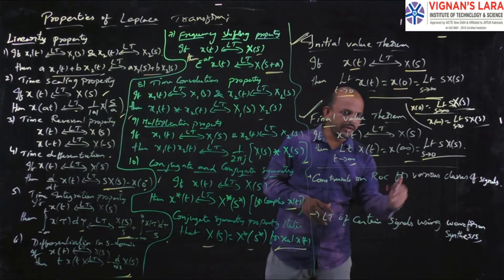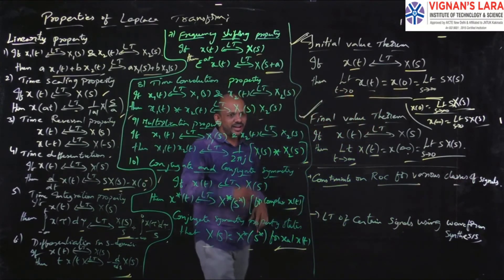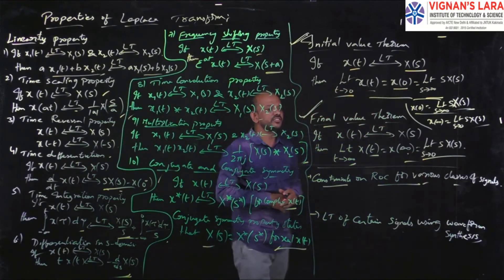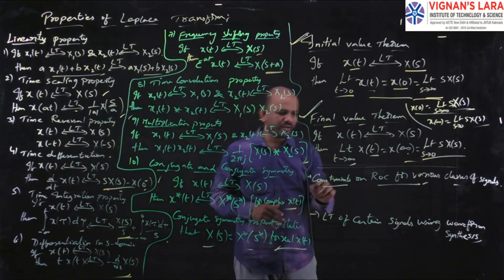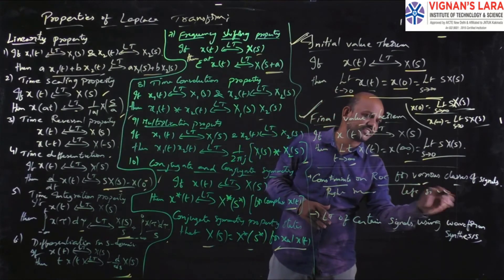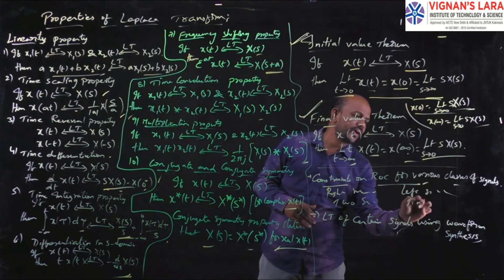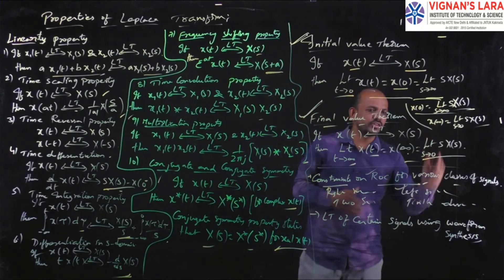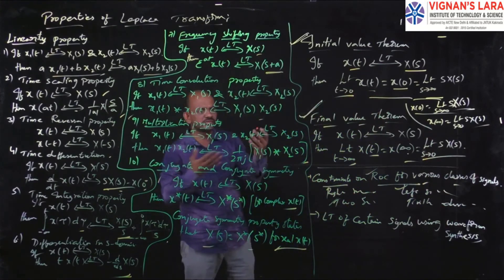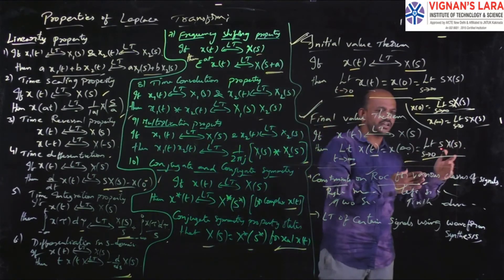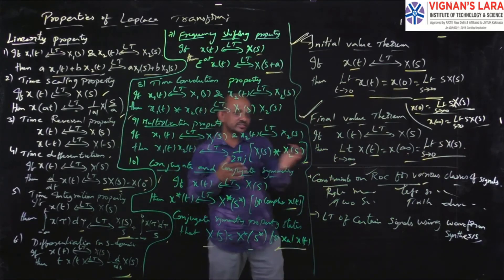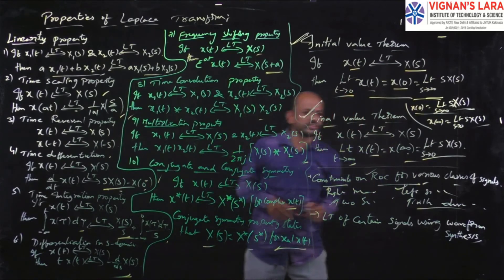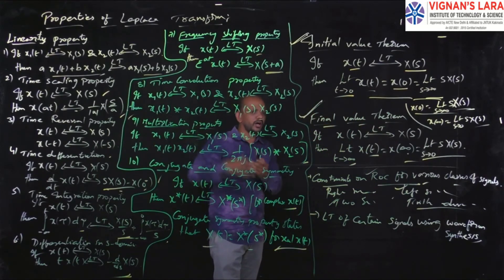We have two remaining topics. First, constraints on ROC for various classes of signals — I already explained this while covering the properties of region of convergence. The classes are: right-sided signals, left-sided signals, two-sided signals, and finite duration signals. For right-sided signals the ROC is right-sided; for left-sided signals the ROC is left-sided; for two-sided signals the ROC is the intersection of both; and for finite duration signals it is the complete s-plane.